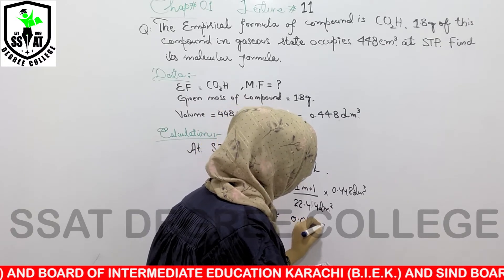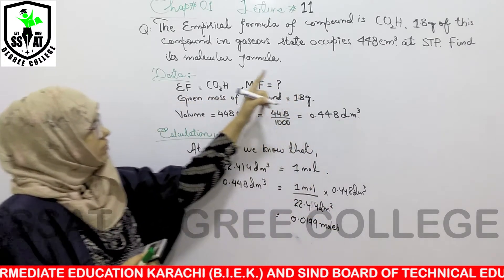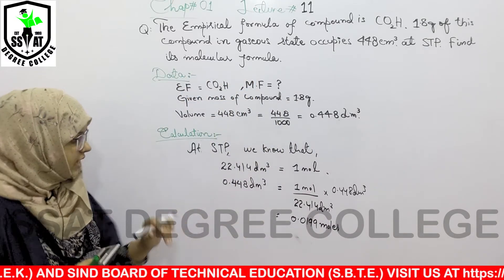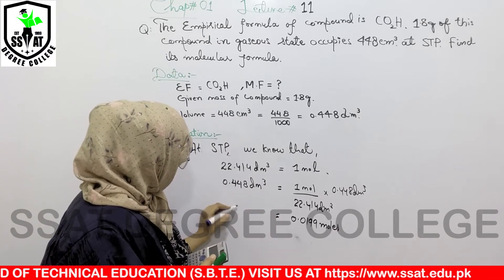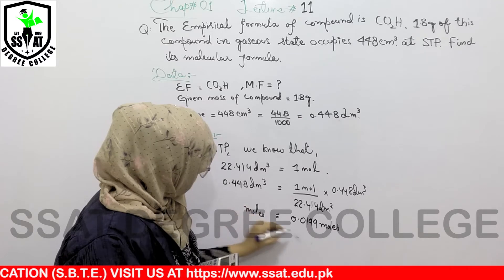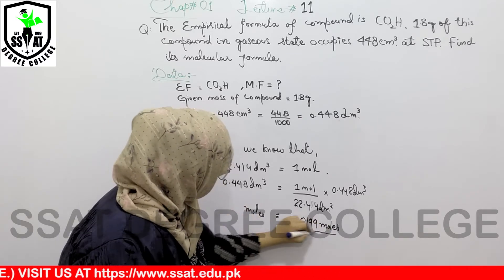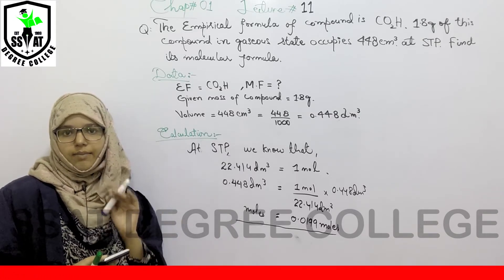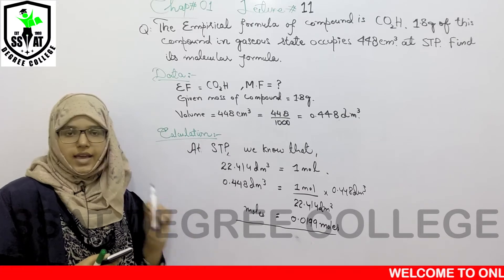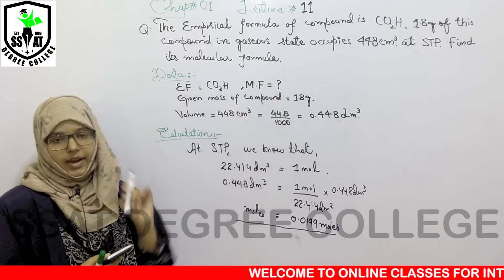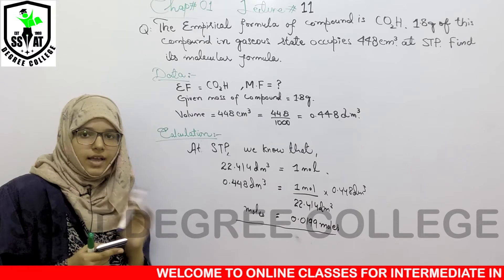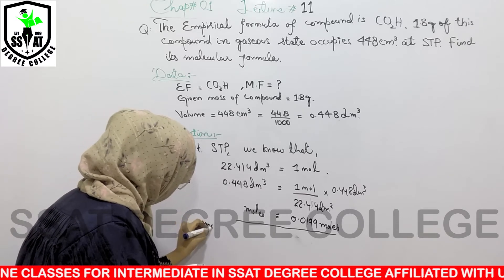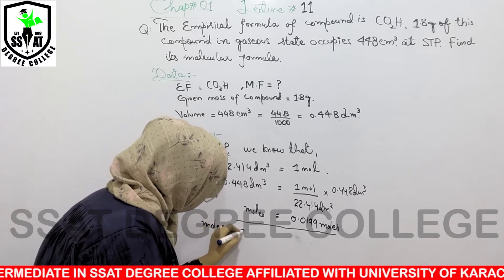This gives us 0.0199 moles. This volume corresponds to the compound which is 1.8 grams — the given compound. Now you have the moles, and you know that moles = given mass divided by molecular mass. Molecular mass is what we don't have; moles we have; given mass we have as 1.8 grams. So we can find the third value — the molecular mass. The mole formula is: moles = given mass divided by molecular mass.